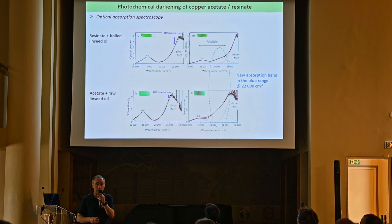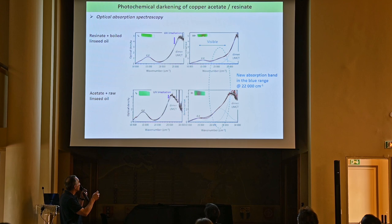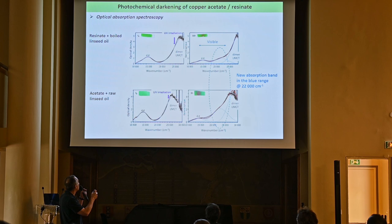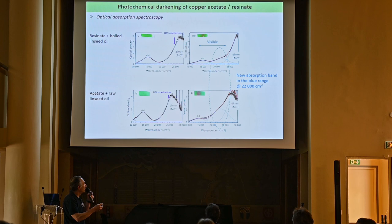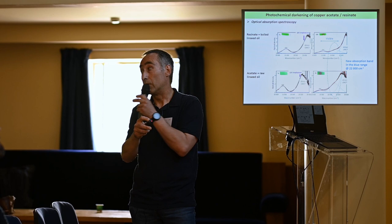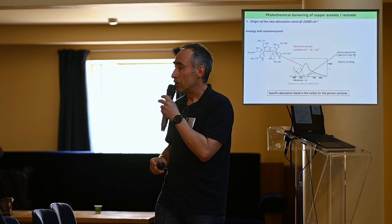From optical absorption spectroscopy performed on the brown spot, the fresh sample shows d-d transitions and the dimer absorption band with a dip in the green region. After irradiation, in the brown region a new absorption band appears at about 20,000 wave numbers — for both resinate with boiled linseed oil and acetate with raw linseed oil. This creates a more or less continuous absorption extending into the visible, with no real dip in the green, which is the reason why the color turns to brown.